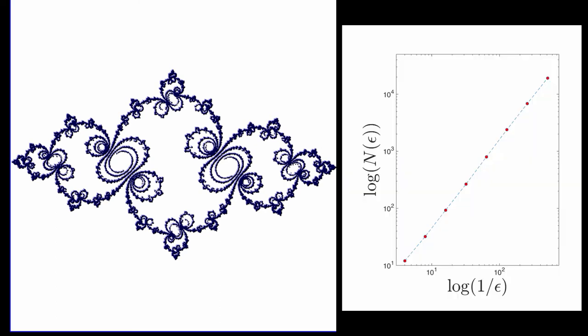The next stage is to plot log of the number of epsilon balls needed versus log of 1 over epsilon. In this plot, I have done that for this Julia set. As you can see, on this log-log plot, we get a very nice straight line. This straight line has slope 1.53, which is an approximation of the capacity dimension of the Julia set, assuming this power relation.